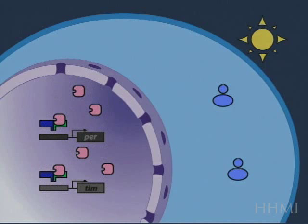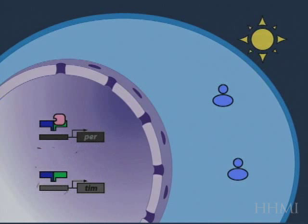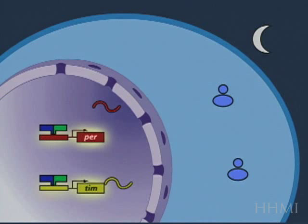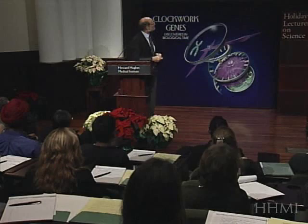Now, when the sun comes up, notice that that sunlight quickly causes the degradation of the timeless protein, and then after timeless is degraded, the period protein slowly disappears, and that disappearance is then followed by the turn-on of transcription of both genes, which is then followed by the production of RNA and the beginning of the next cycle.